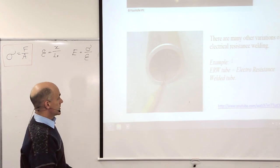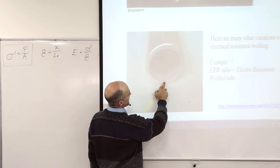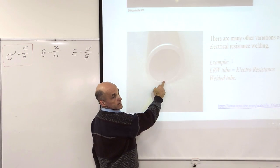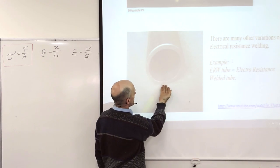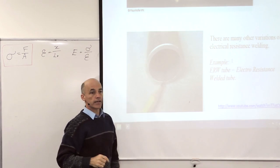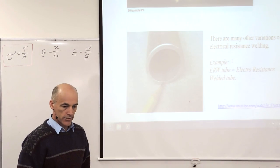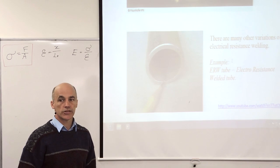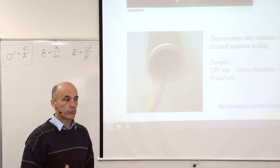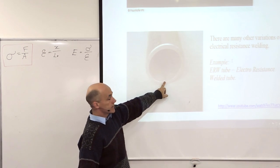So all the tubes, ERW tubes. You'll notice there'll be a bit of flash on the inside. Because they can't clean that one up. They clean up the outside. But the inside one they can't get to. So that's how you can tell. That's the sort of tube that they use for furniture. And you can't use it for pressure. Because it's likely to bust right here. But it's used for most ordinary pipe.